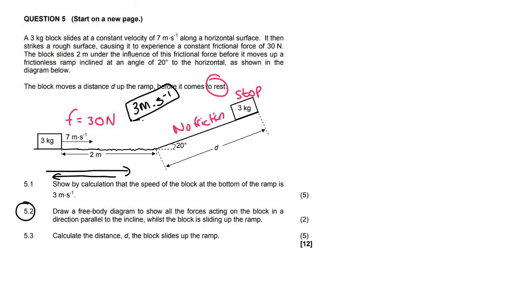Moving on to 5.2 now. They said draw a free body diagram to show all the forces acting on the block in a direction parallel to the incline while the block is sliding up the ramp. So on a normal slope, we would have had normal force. There's no applied force. Is there friction? They said no friction. So there's no friction, but there is a gravity parallel and also gravity perpendicular. But what's weird about this one is they say in a direction parallel to the incline. So that technically means we're only going to show the FG parallel.